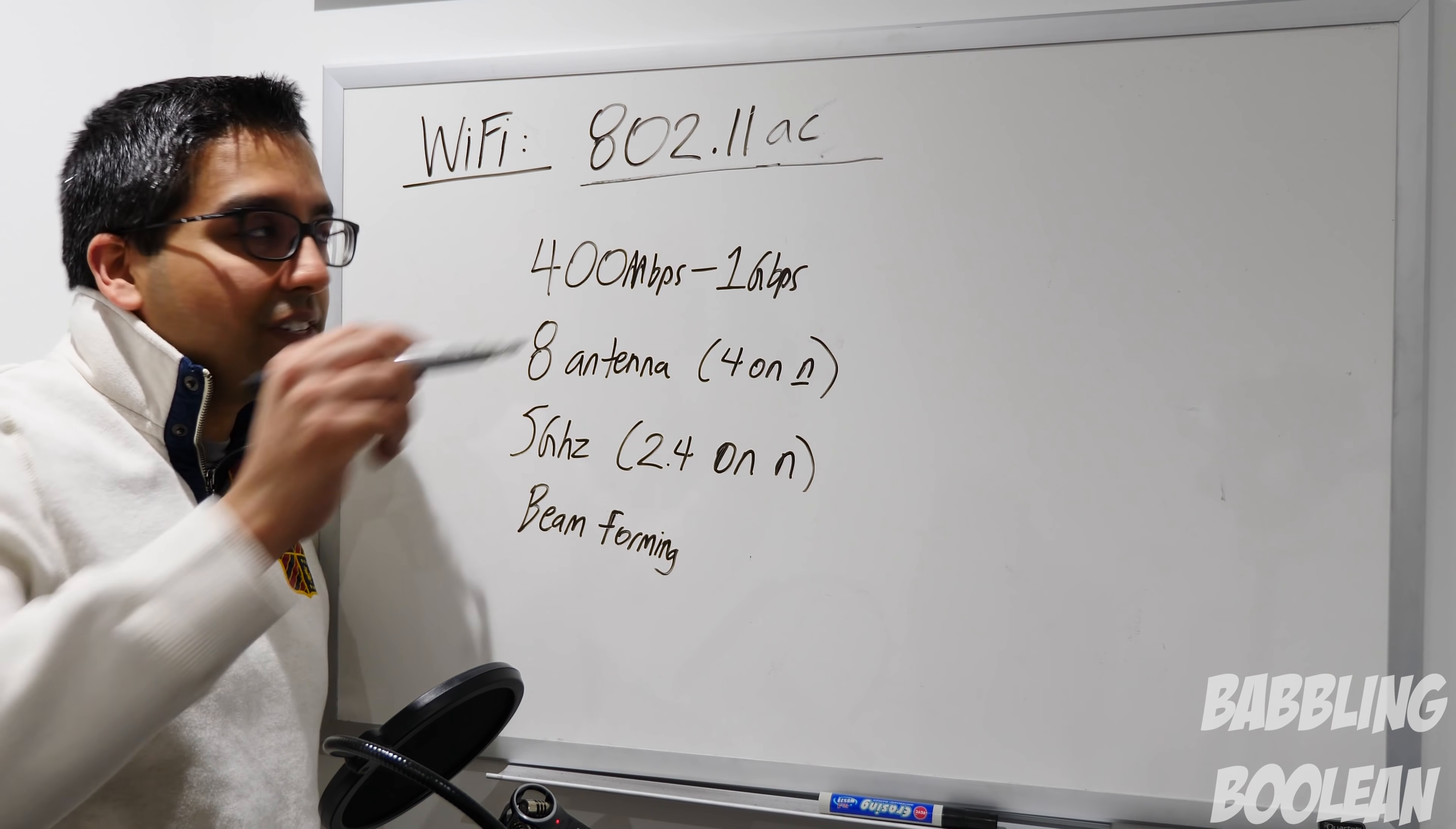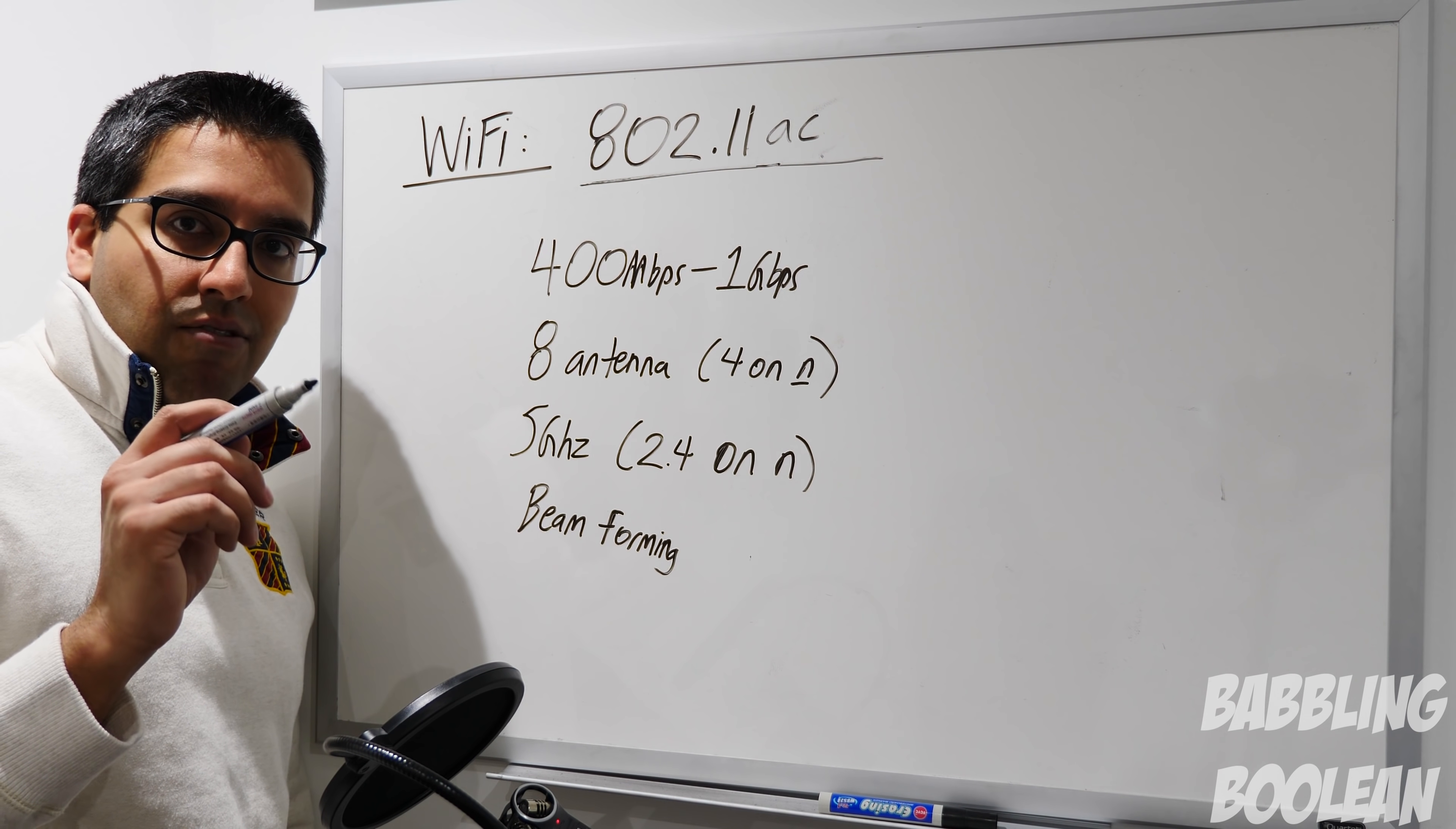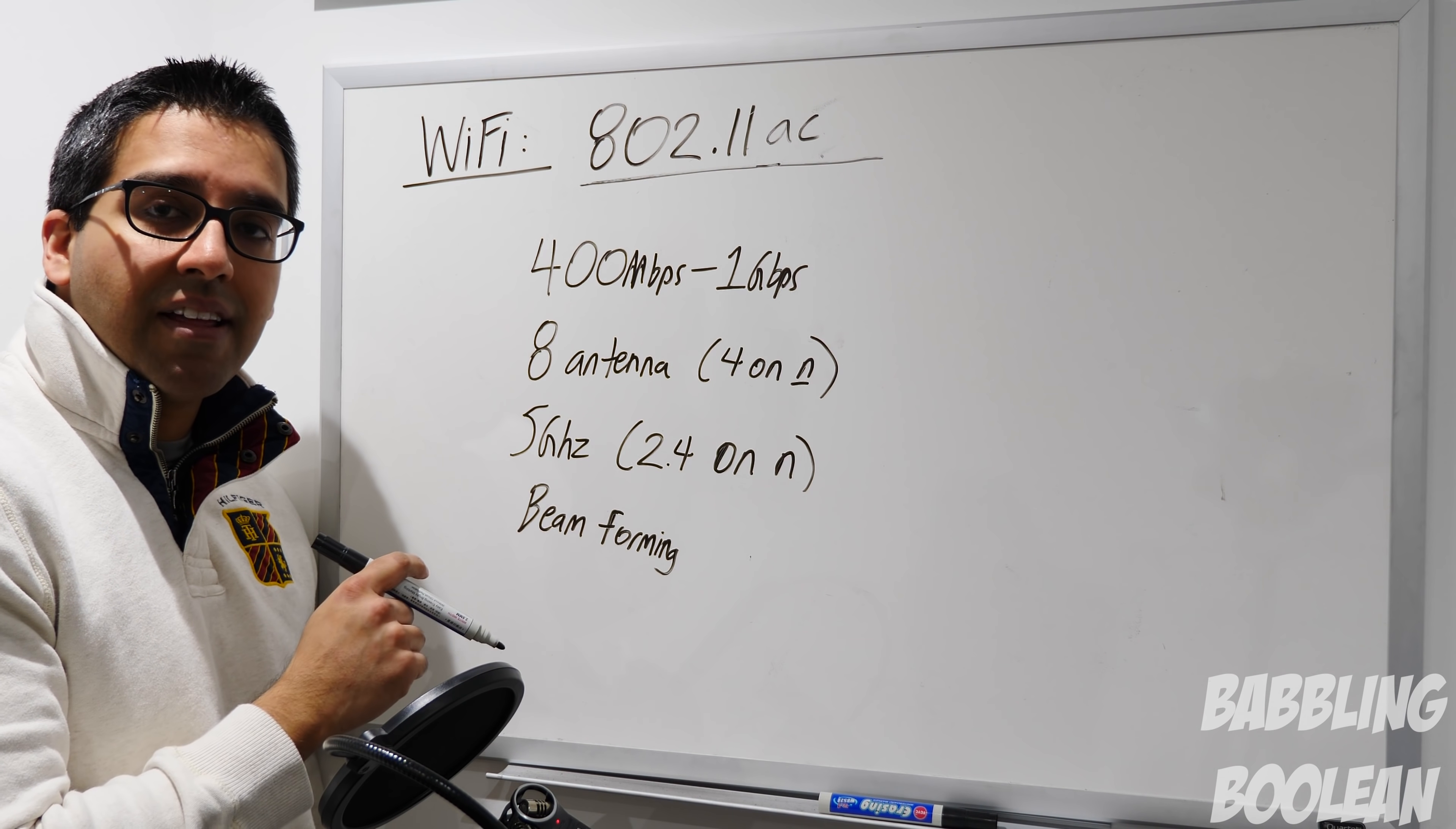And now we're going to finally jump over to AC. AC is extremely popular now. It has been popular for the last five years. It's just been easily available and affordable, and it's pretty much the standard right now as of this video upload date. For starters, the speed made another huge jump ranging from 400 megabits to 1 gigabit per second. Again, this is all theoretical speed, but on paper that's a huge jump.